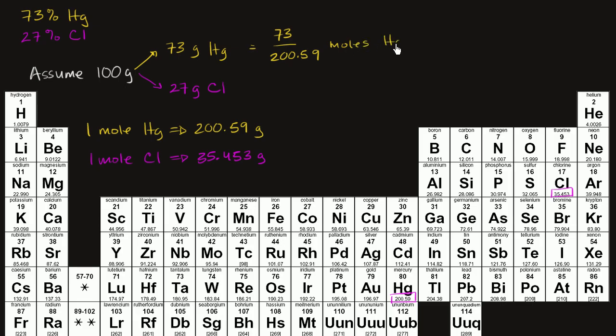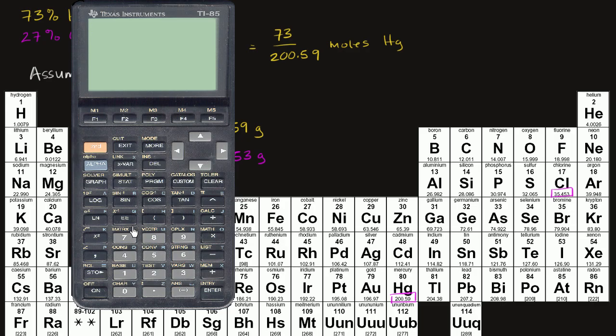Moles of mercury. And remember, moles are just a number, Avogadro's number of something. But let's just figure out what it is. So if we take 73 divided by 200.59,